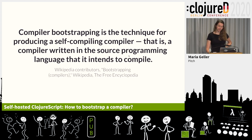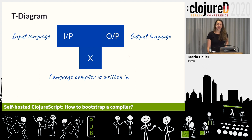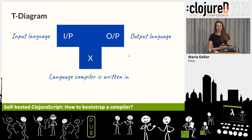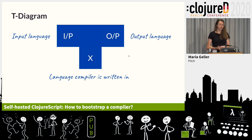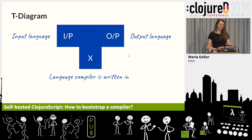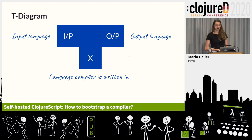To take this apart, I'll be using T-diagrams, which is short for tombstone diagram, or also just because it looks like a T. T-diagrams are often used to describe compilers or any language processing program, and they're quite straightforward. At the bottom, you denote with X the language the compiler is written in. Then to the left you have the input language — the language the compiler accepts — and to the right is the output language, the language the compiler produces.